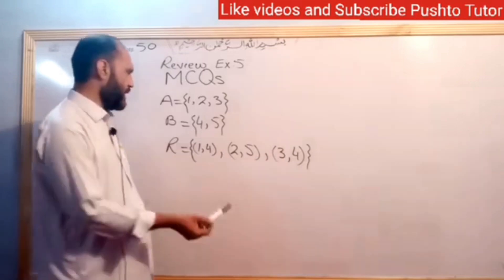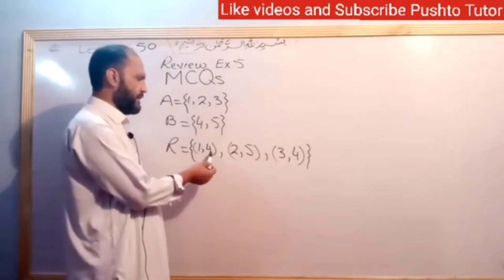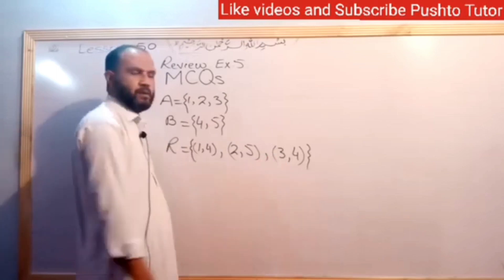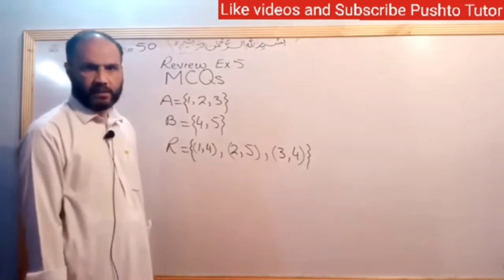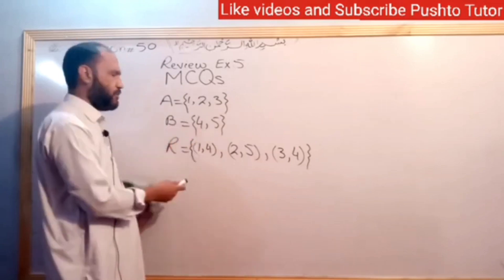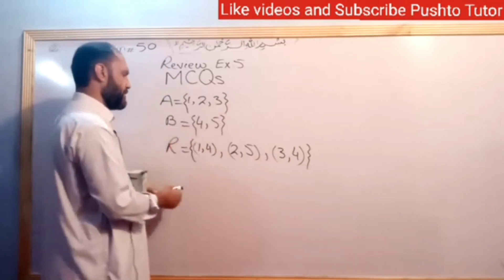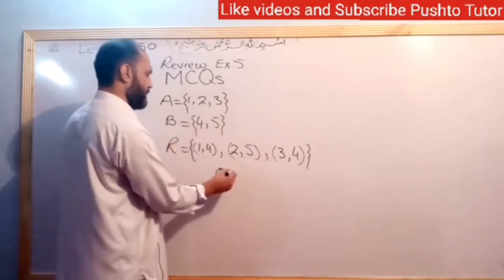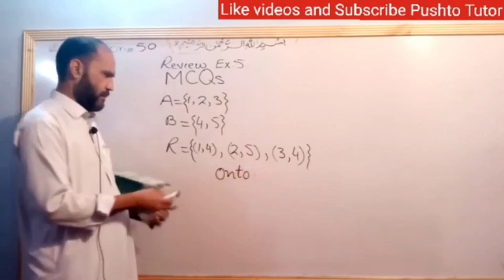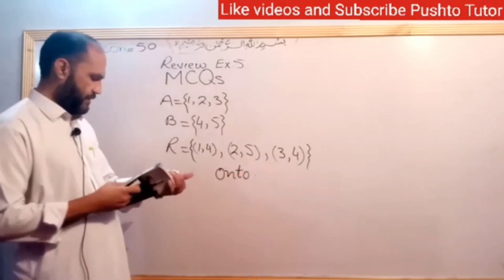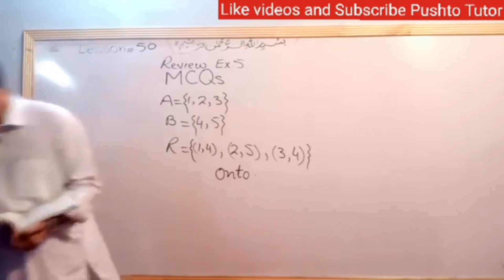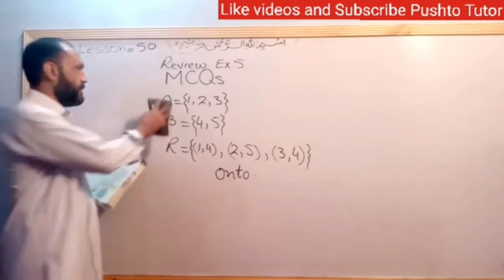The second elements are {4, 5, 4}, so the range is {4, 5}. The range equals the B set. Therefore, it is an onto function from A to B. The correct answer is option (c): onto function.